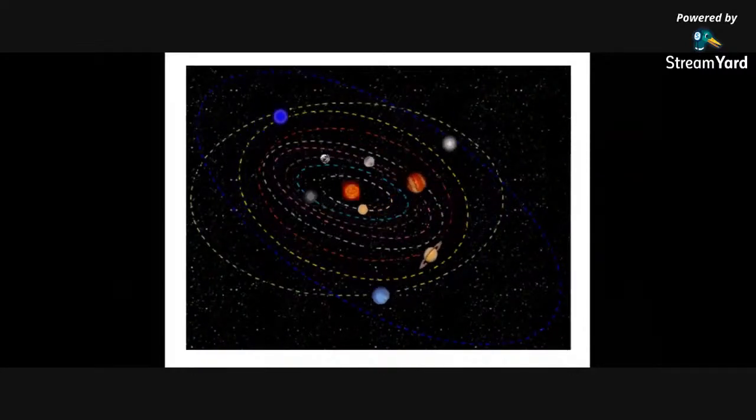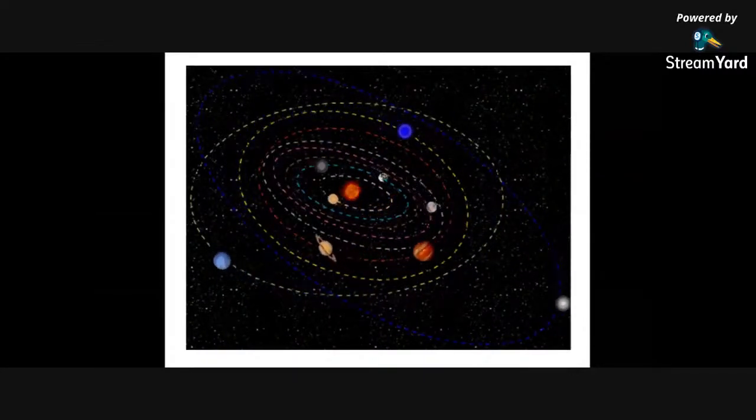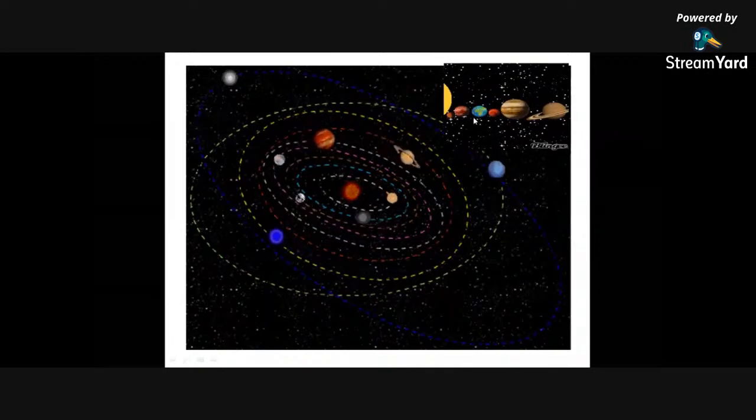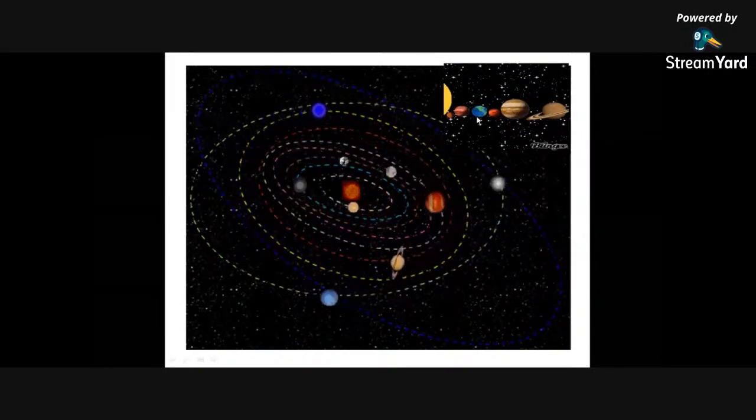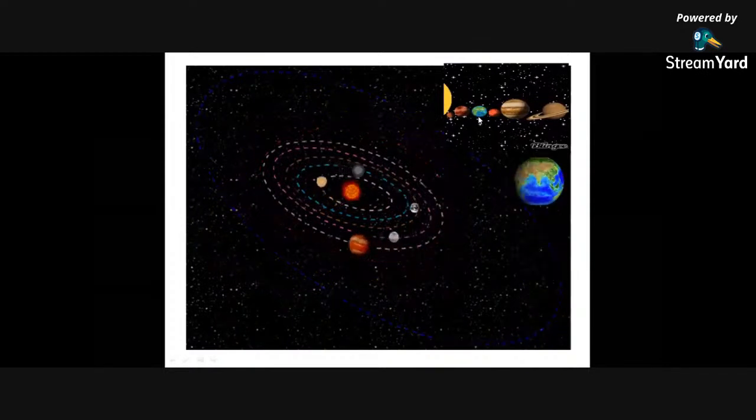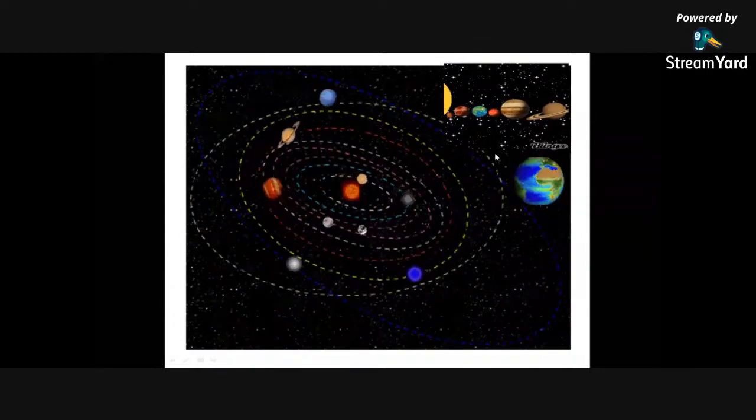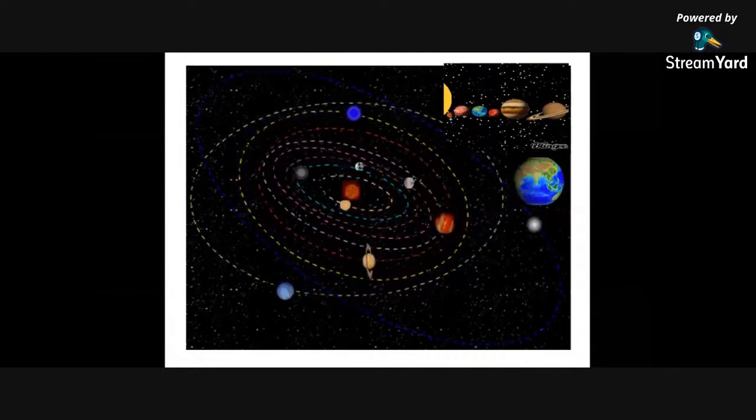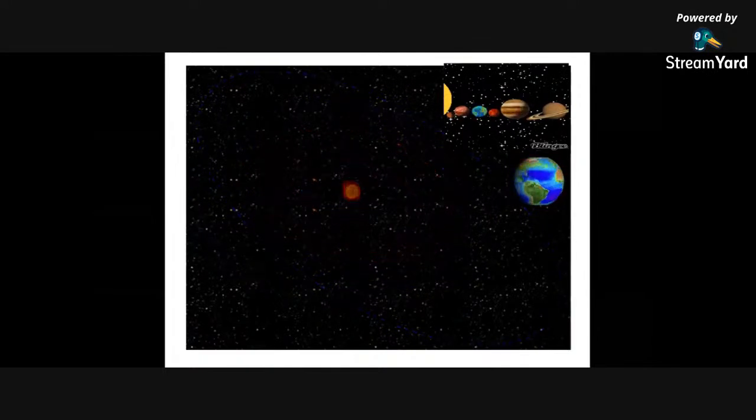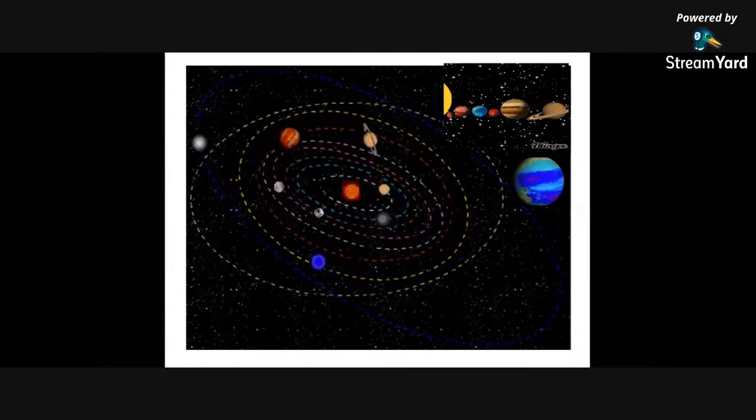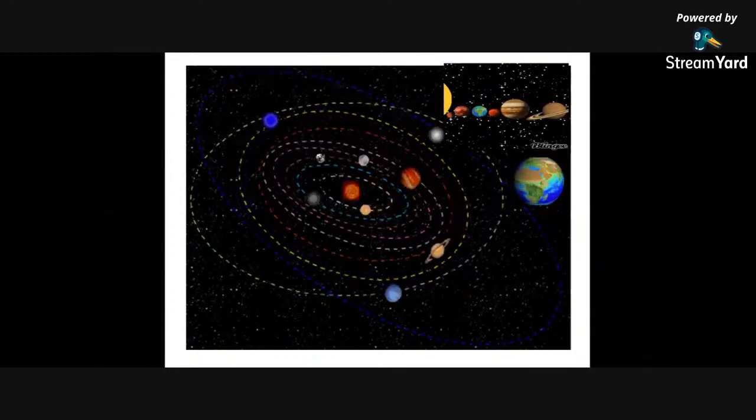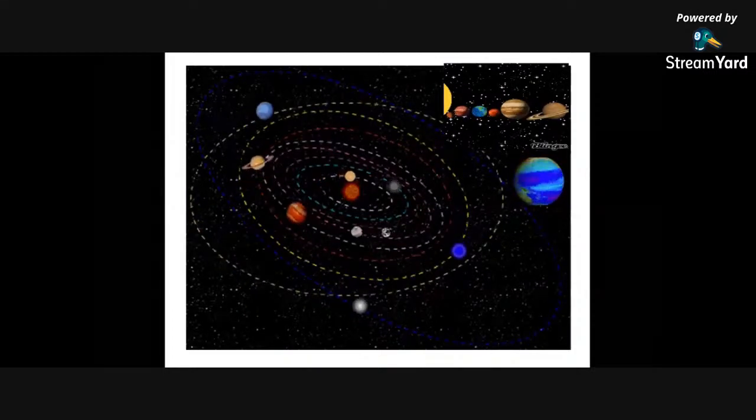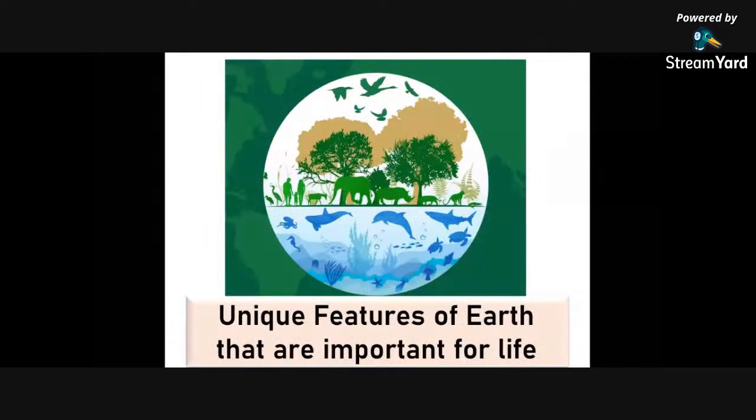Earth belongs to the solar system. It is the third planet away from the Sun. Our home planet is a rocky terrestrial planet with a solid and active surface with mountains, valleys, canyons, plains, and so much more. It is special because it's an ocean planet that covers 71% of Earth's surface. Here are the unique features of Earth that are important for life.